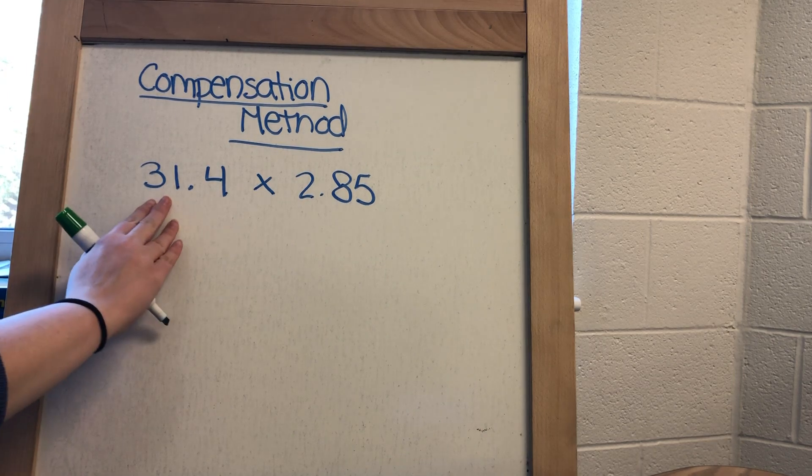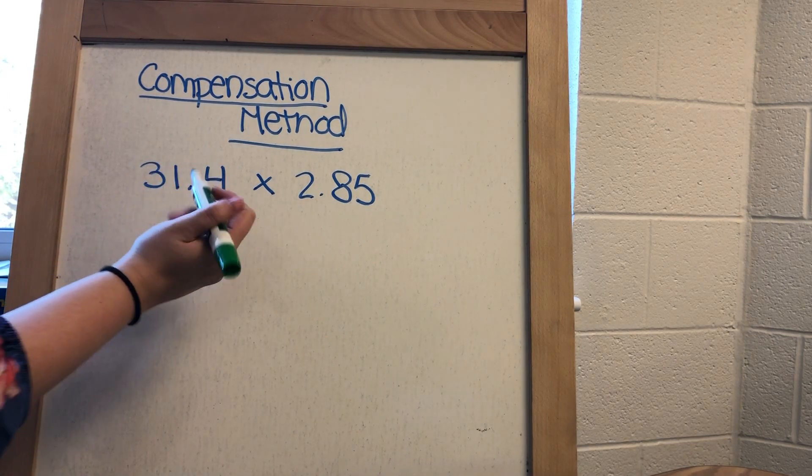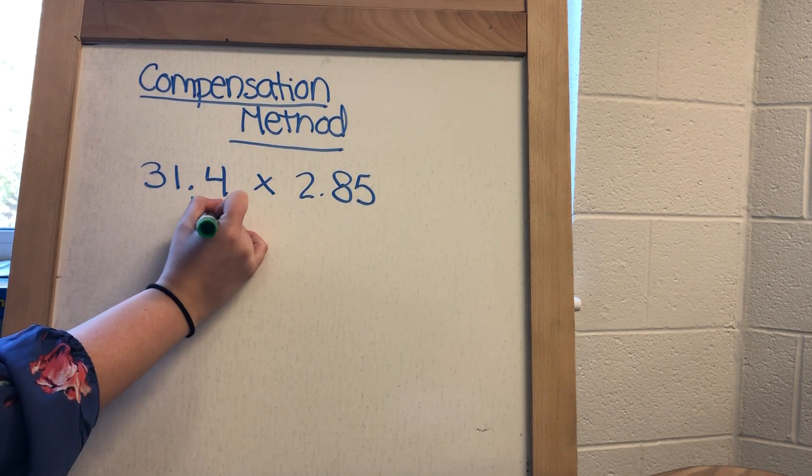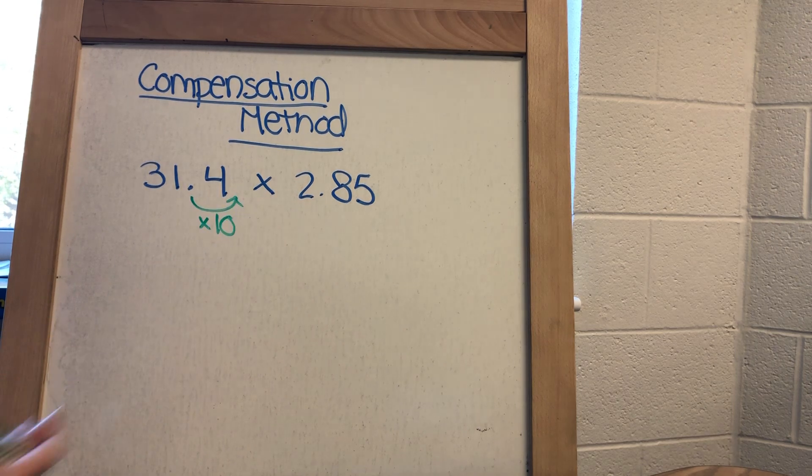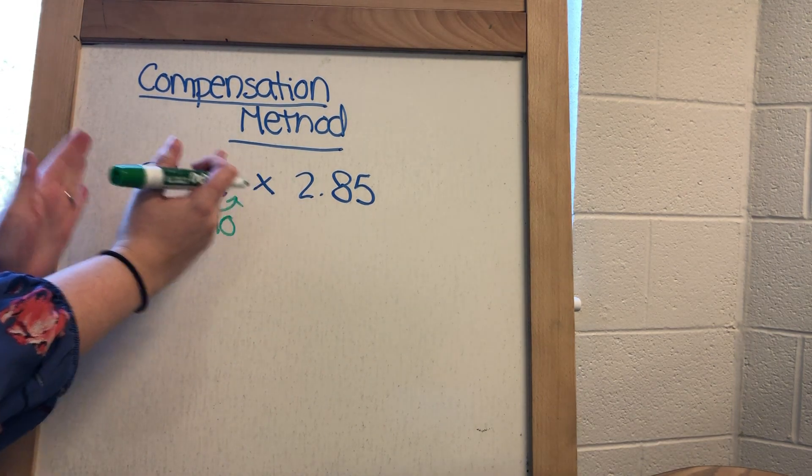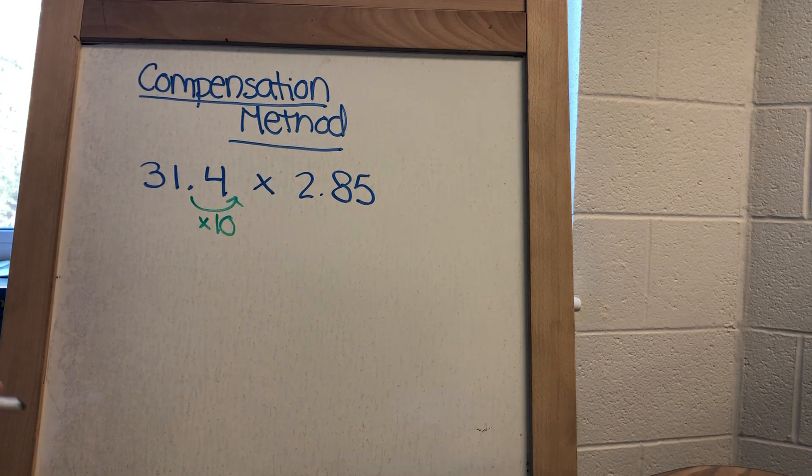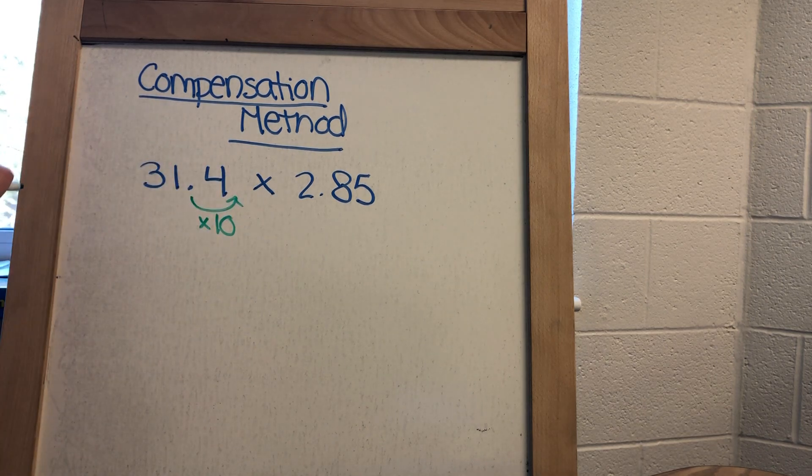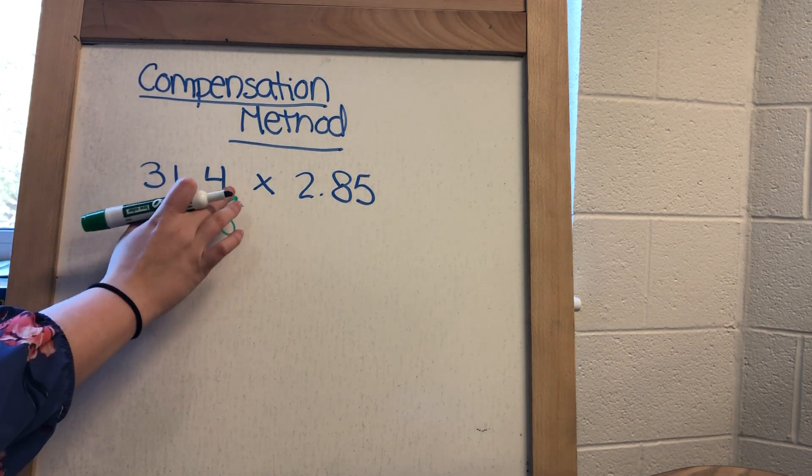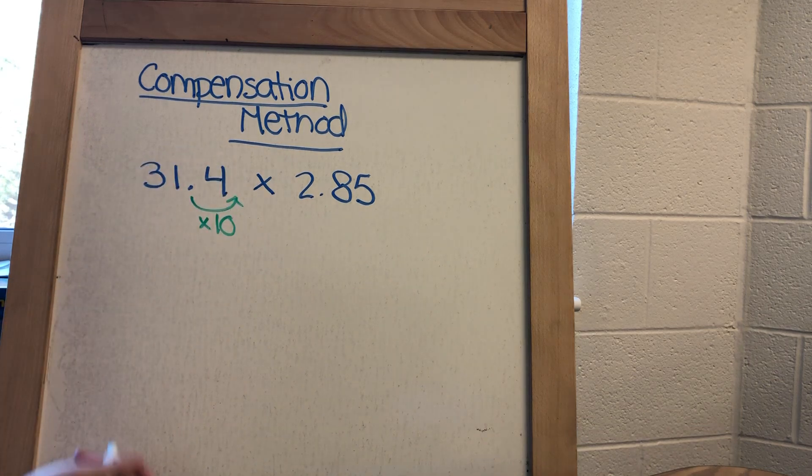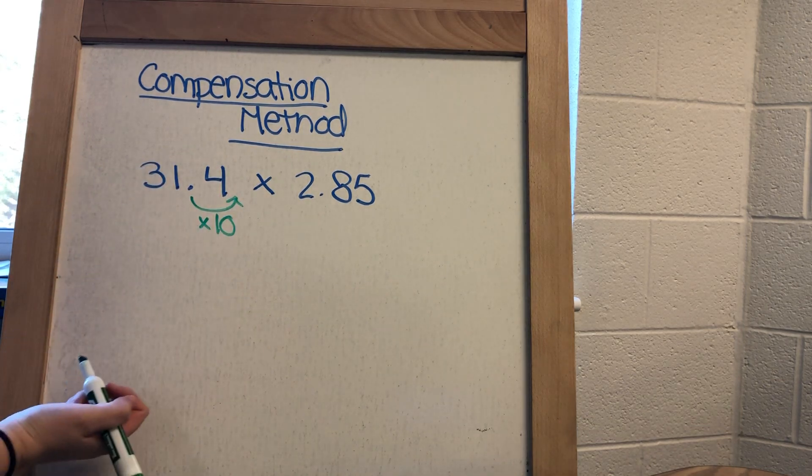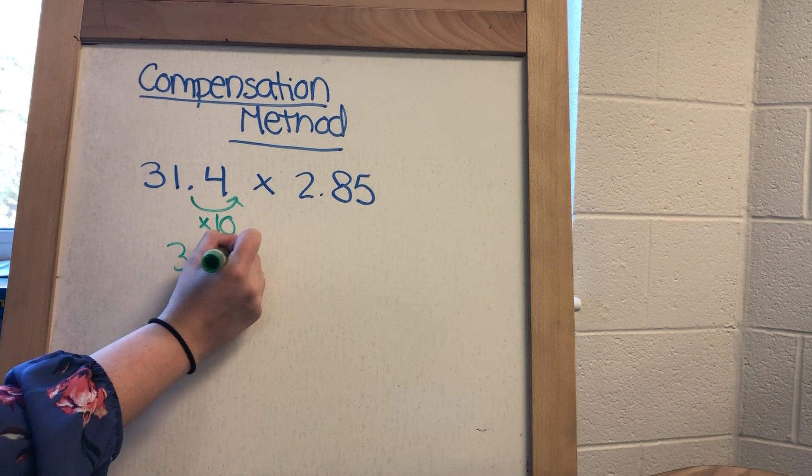So for my first one, 31.4, if I multiply by 10 wholes, all of my numbers are going to shift into the next place value up. So my decimal is going to end up being behind that 4. So when I multiply this number by 10, I now have 314.